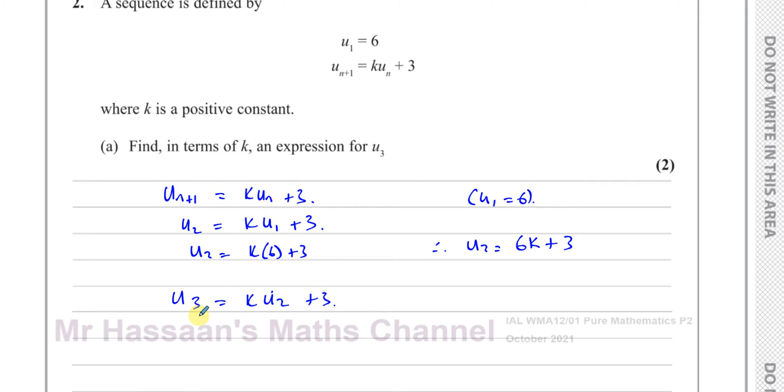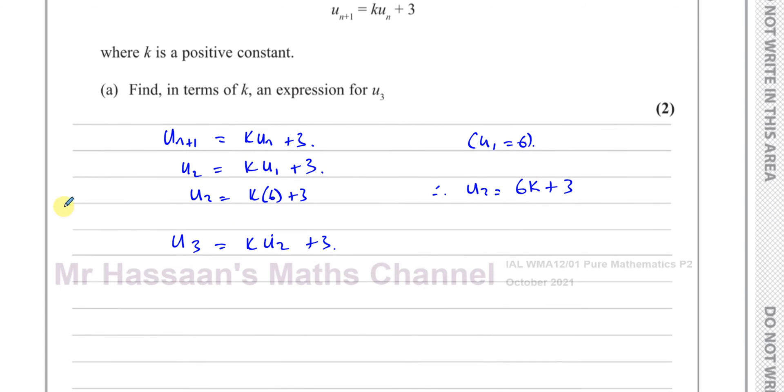Following the same logic, the third term is K times the second term plus 3. I know U2 is 6K plus 3, so U3 is K times (6K plus 3) plus 3. If I simplify that, that's 6K squared plus 3K plus 3.